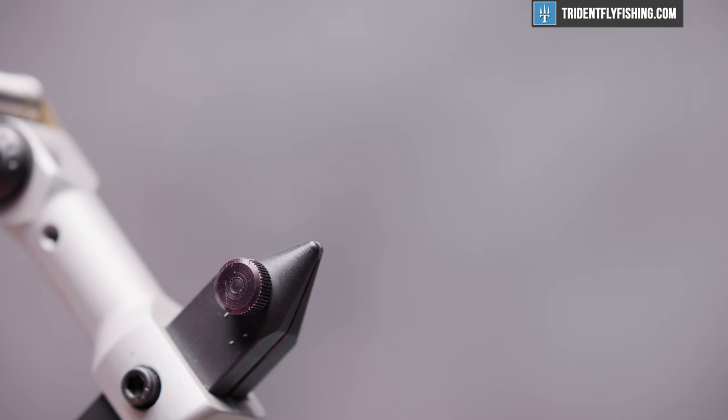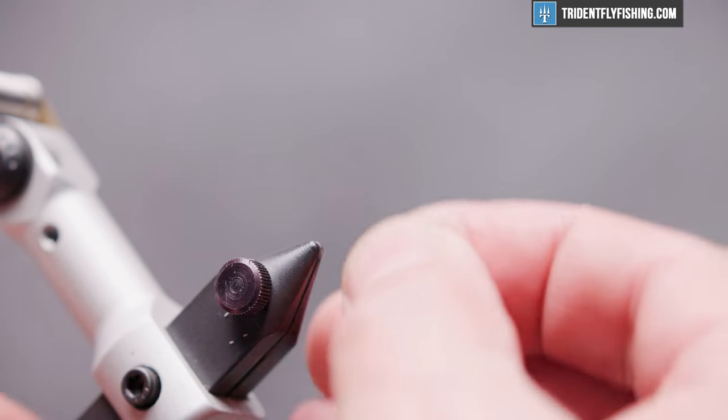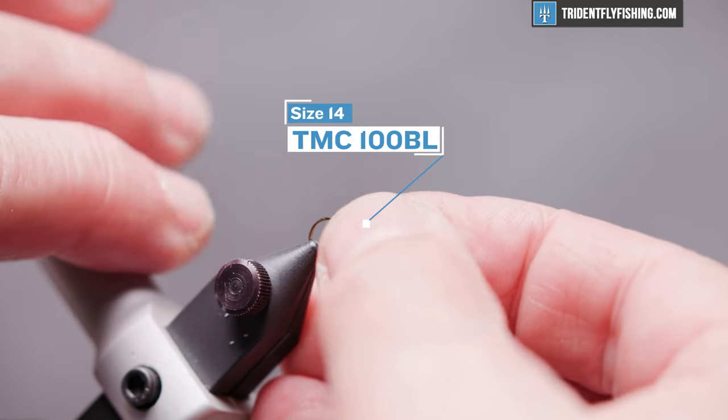The hook we'll be using today is a TMC 100 BL. That's a barbless version of their standard dry fly hook.